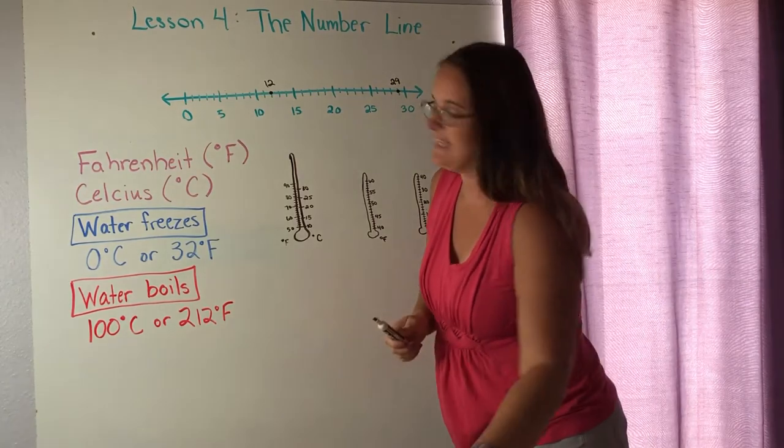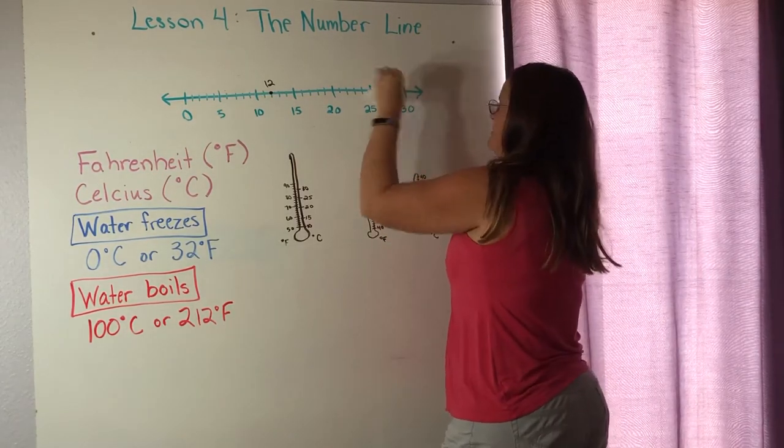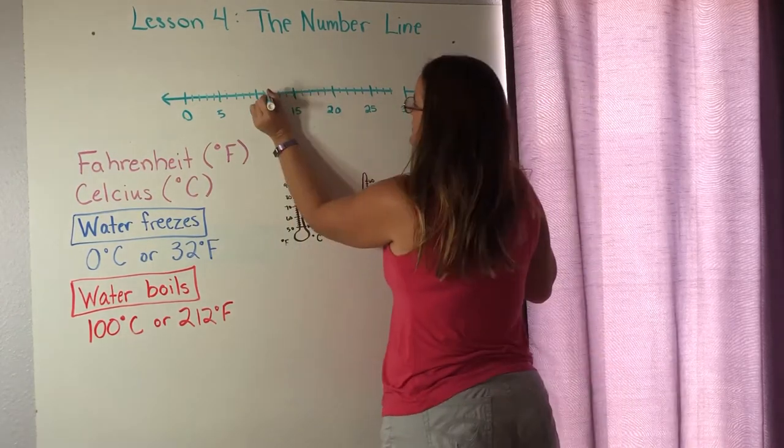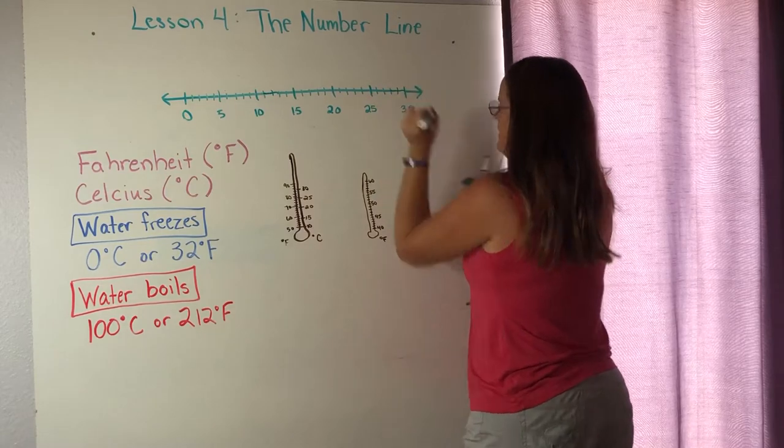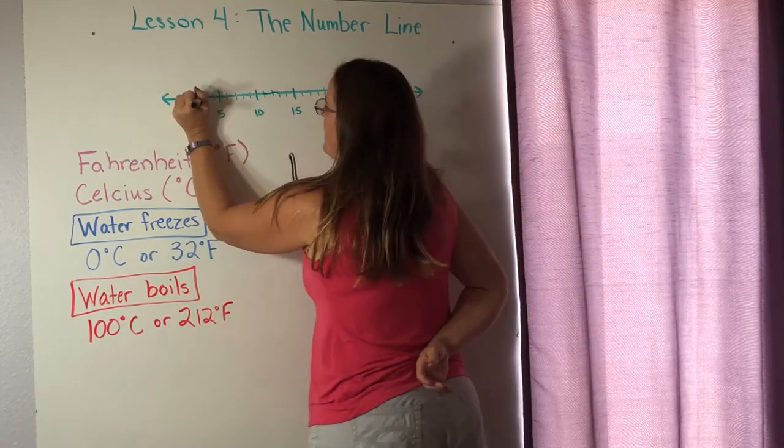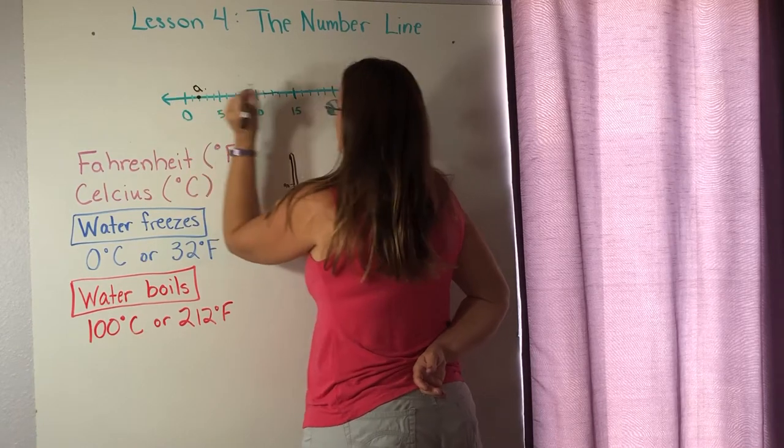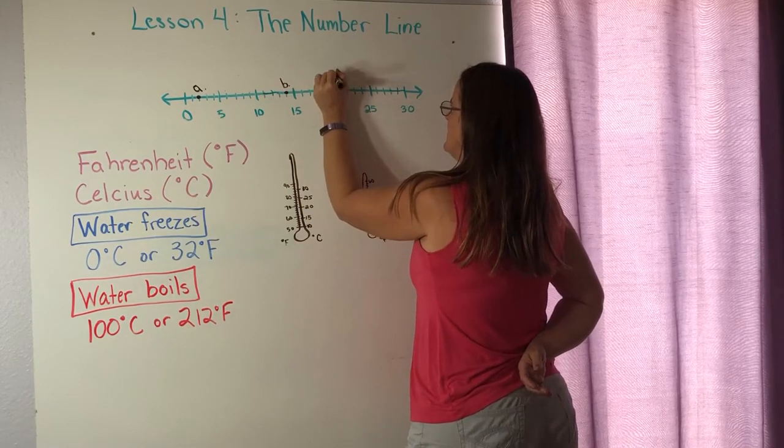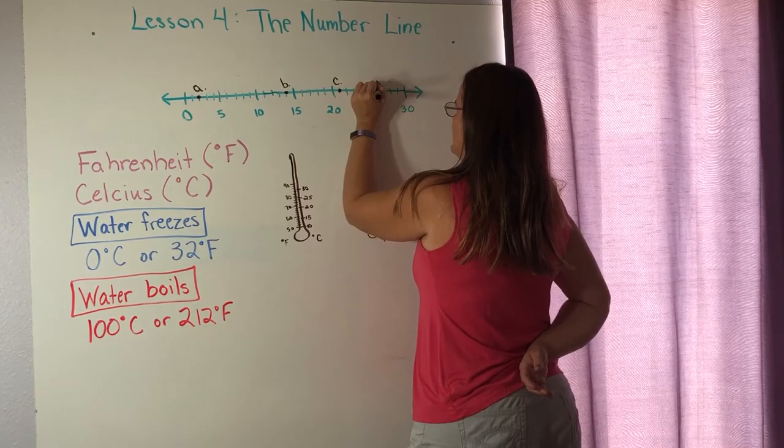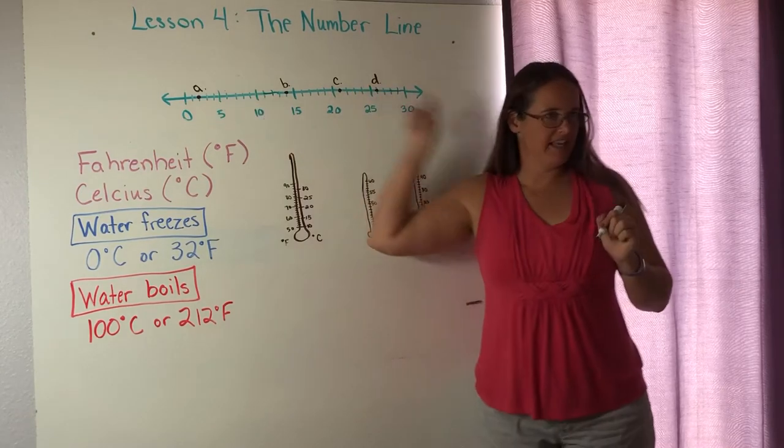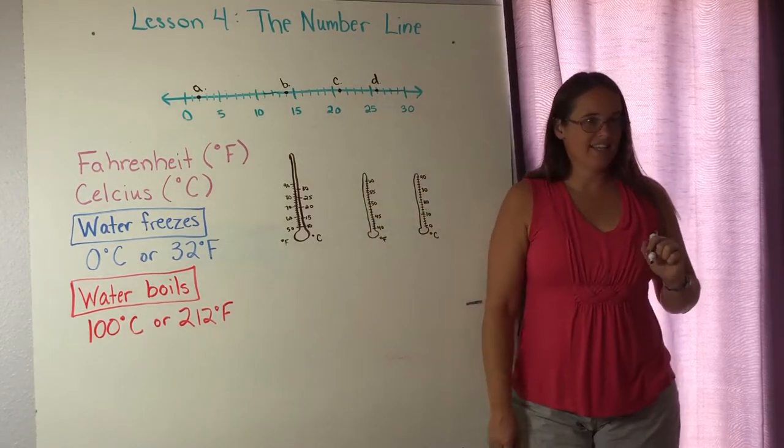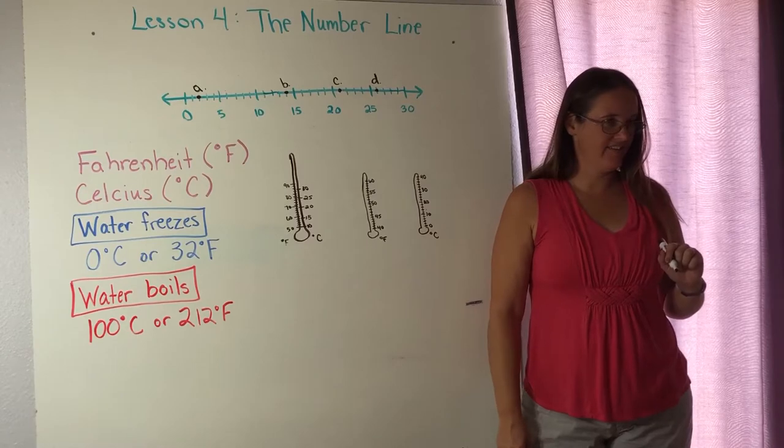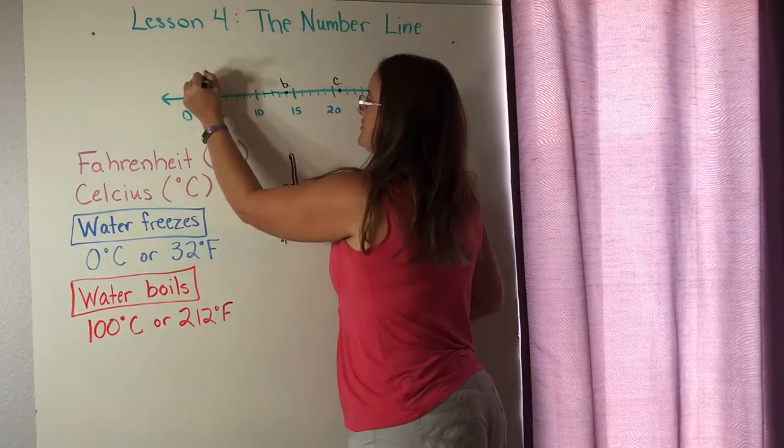Even though I only labeled them by fives. But every number is represented up here. So something that you might see in your book is they might give you a number line. Let's fix mine because I messed up some of the points there.